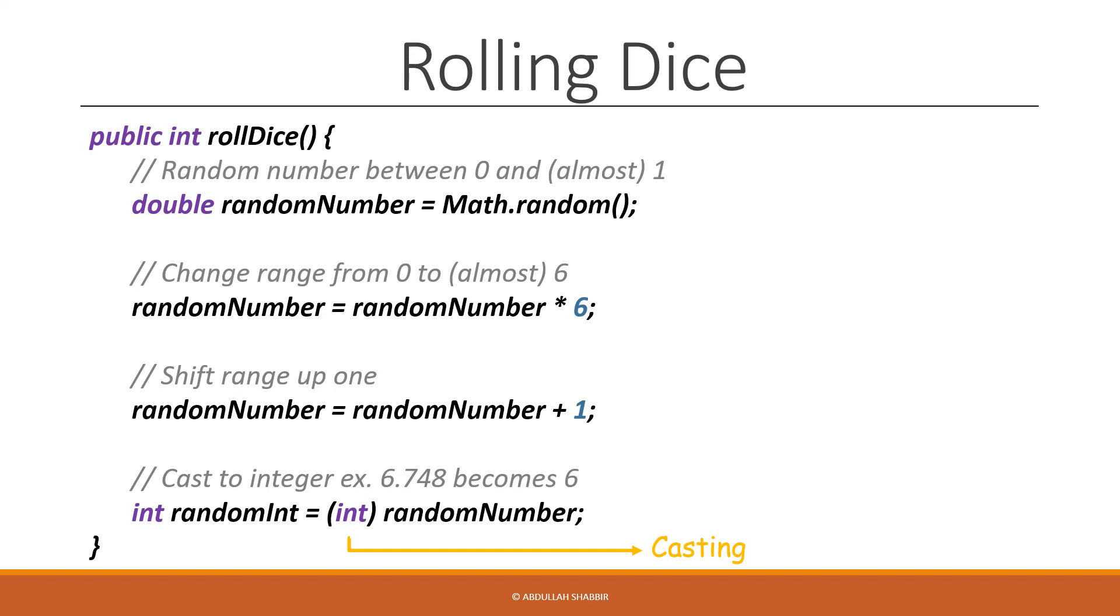And again, even if the double random number value is close to 7, something like 6.999, when this is casted to an int, it will turn into 6 because the decimal portion is ignored entirely. So now we have the correct range, 1 through 6, all integers.